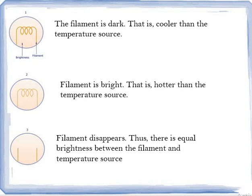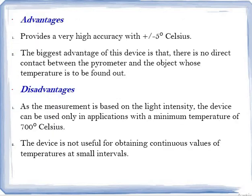So there are three types: filament dark, filament bright, and filament disappears. With the help of pyrometers, accuracy will be plus or minus five degrees Celsius — high accuracy. Another biggest advantage is that there is no contact between the pyrometer and the object whose temperature is to be found. There is no medium, and that is the biggest advantage — no connection needed to measure.